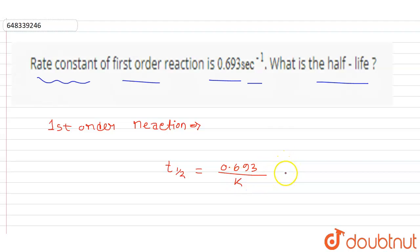We have to find the half-life here, so we can put the value of the rate constant, which is 0.693. This gets cancelled and the final answer comes out to be one second.